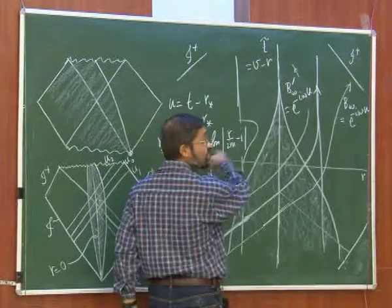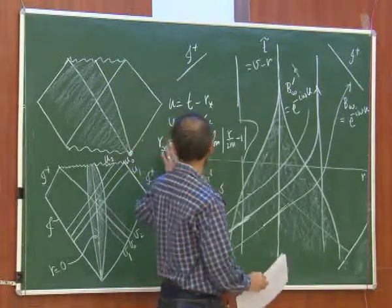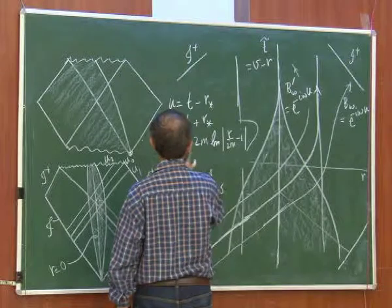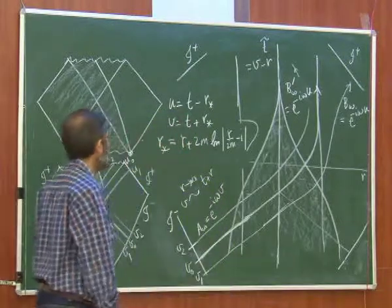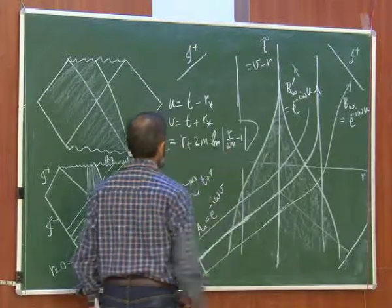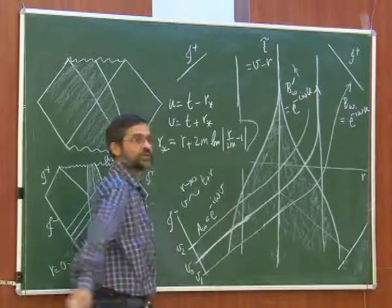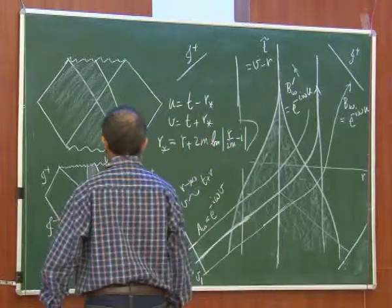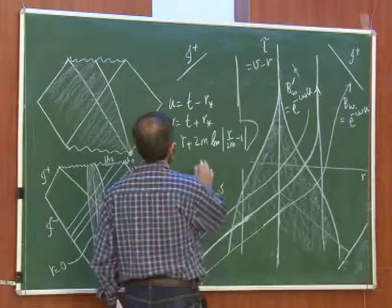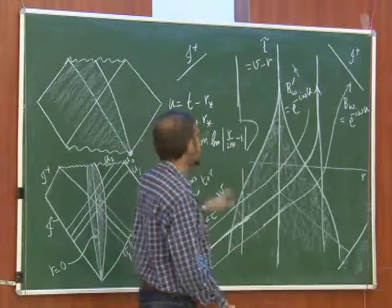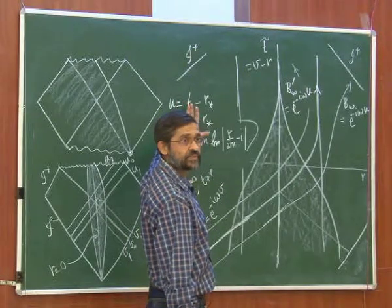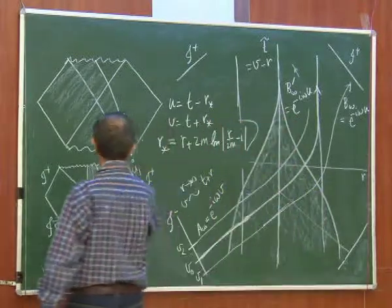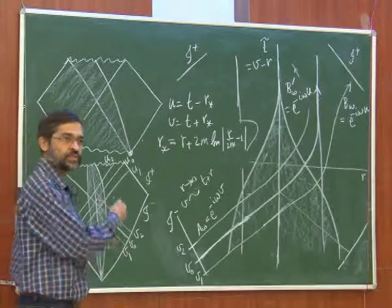If you look at the tortoise coordinate formula, you find two behaviors of r*. The infinity behavior is dominated by r* ≈ r, and near the horizon r* goes to minus infinity. When r* goes to minus infinity for any fixed t, u goes to plus infinity. So at the future horizon, u goes to plus infinity — this is something that we are going to use right now.